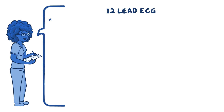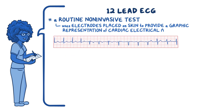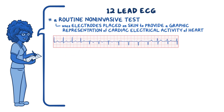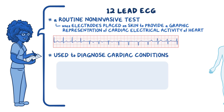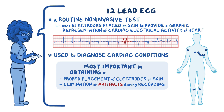As a quick recap, the 12-lead ECG is a routine, non-invasive test that uses electrodes placed on the skin to provide a graphic representation of the electrical activity of the heart, and can be used to diagnose various cardiac conditions. The proper placement of the electrodes and elimination of artifacts during the recording are the most important factors for obtaining an accurate ECG for the healthcare provider to interpret correctly.